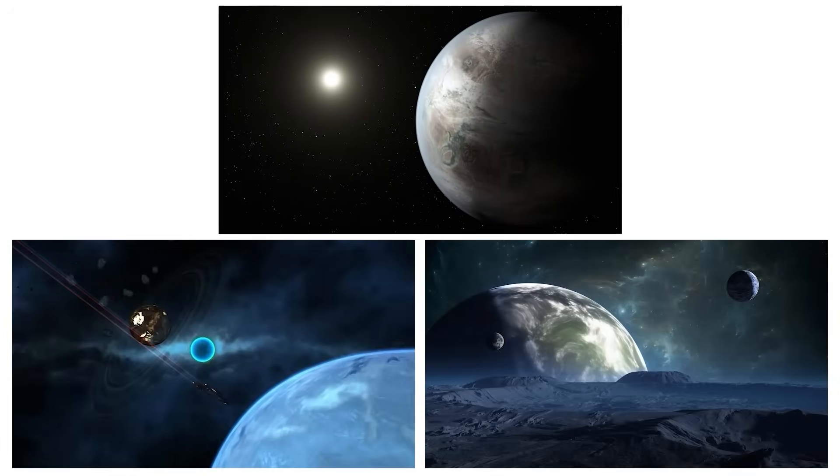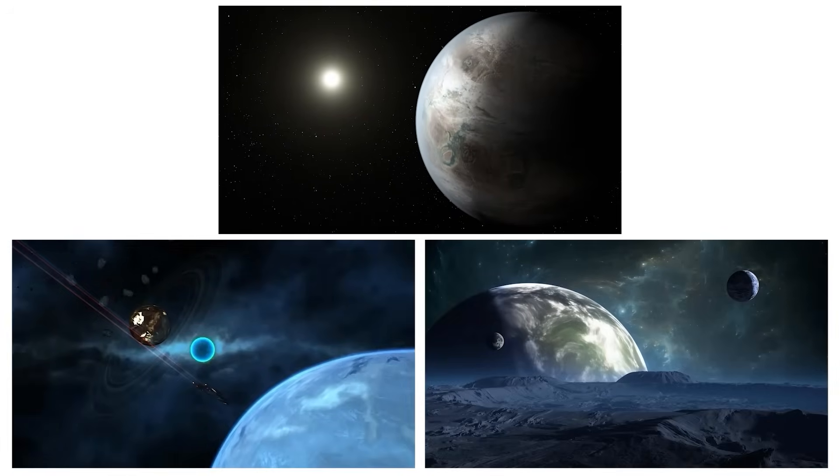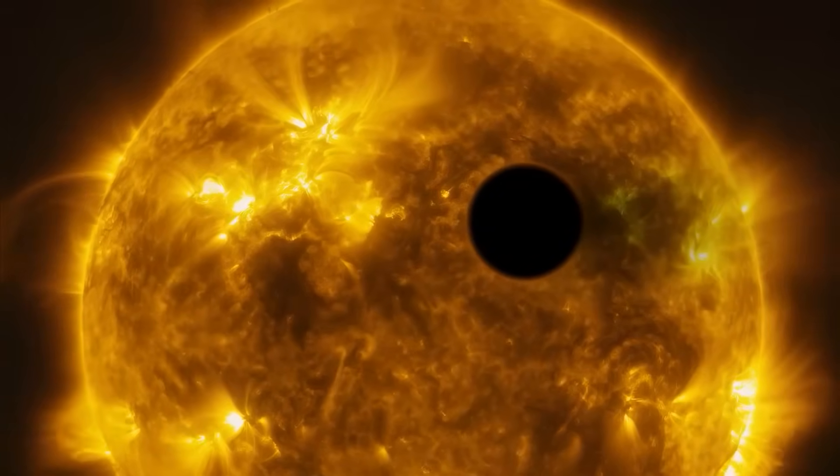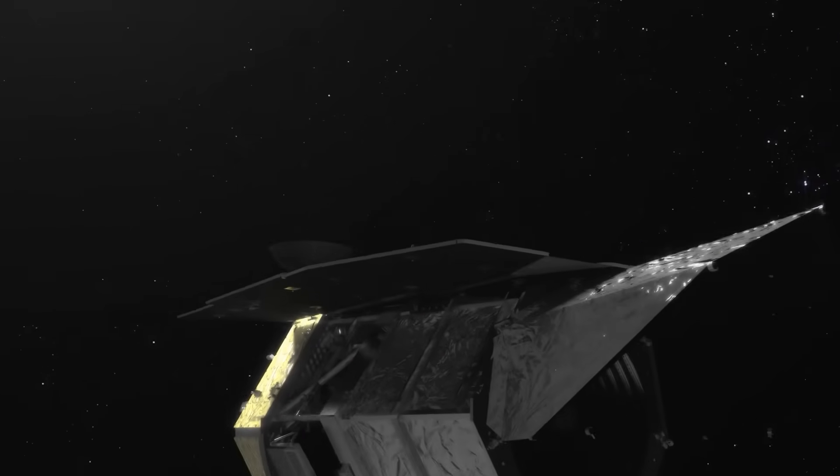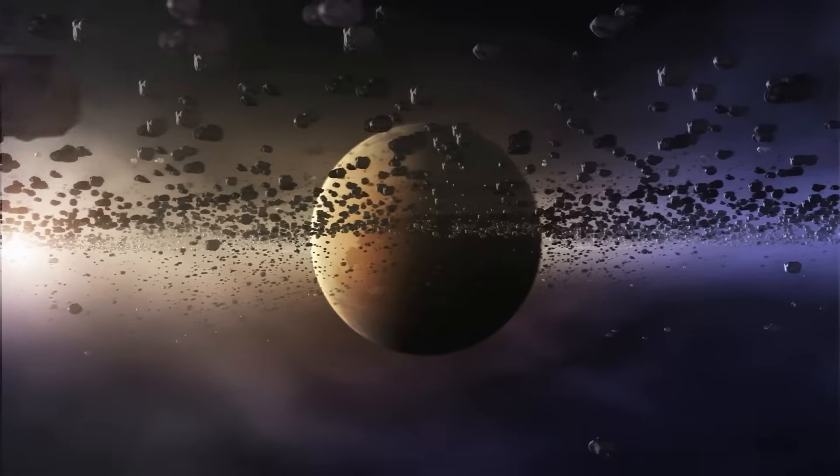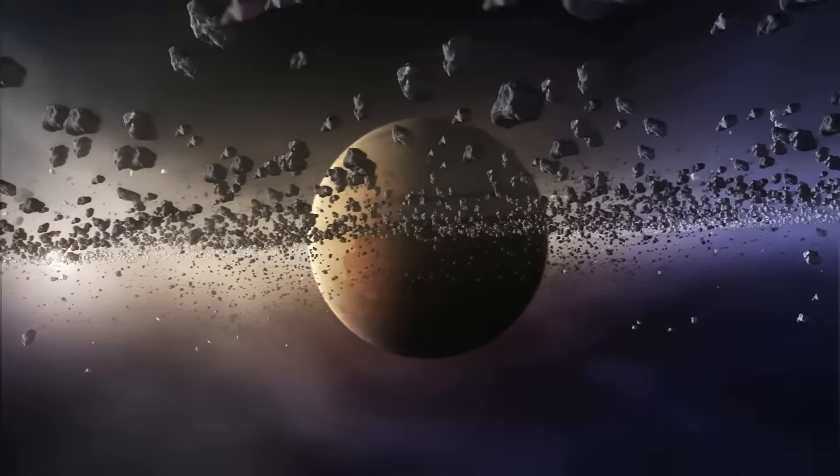Why? Because planets rarely form alone. If there's one, chances are there are more. Possibly Earth-sized ones tucked closer to the star. Or icy moons orbiting TWA-7b, like Europa or Enceladus around Jupiter.